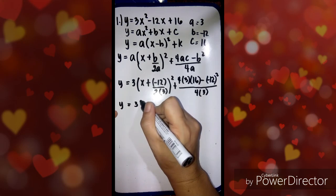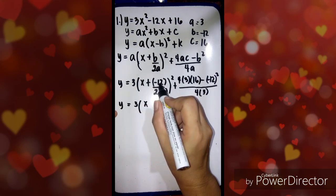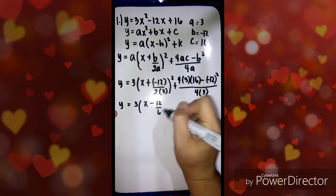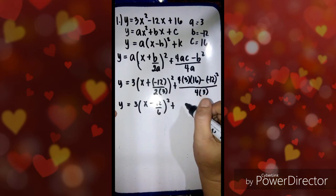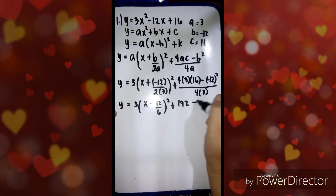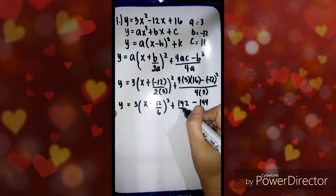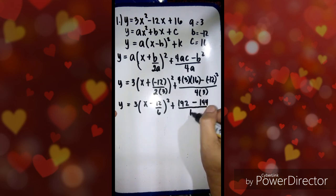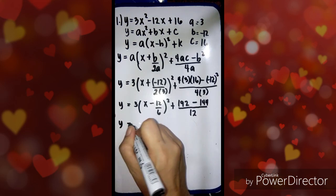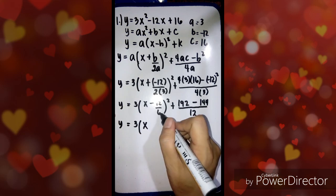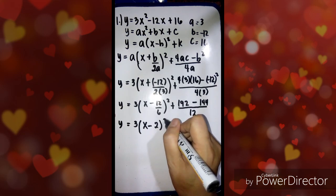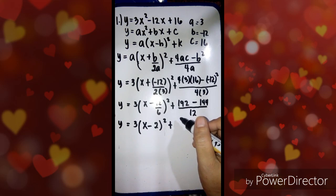Next, we simplify the result. We have y equals 3 times x — positive multiplied by negative is negative — so negative 12 over 6, squared, plus 4 times 3 times 16 is 192, minus negative 12 squared which is 144, all over 4 times 3 which is 12. Then negative 12 divided by 6 is negative 2, and 192 minus 144 is 48.